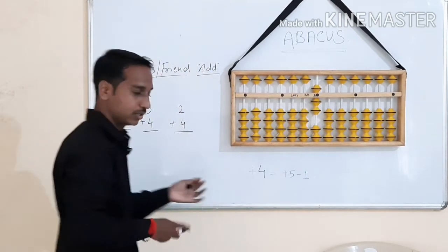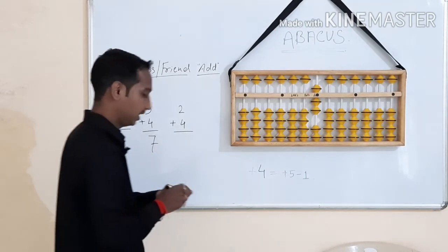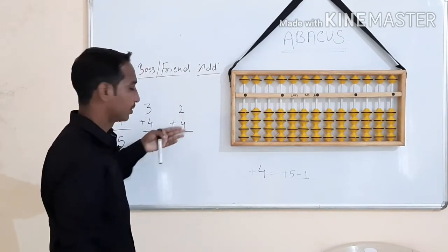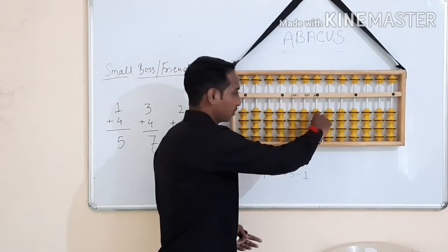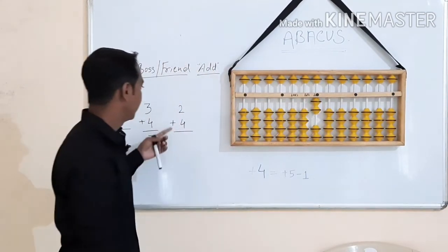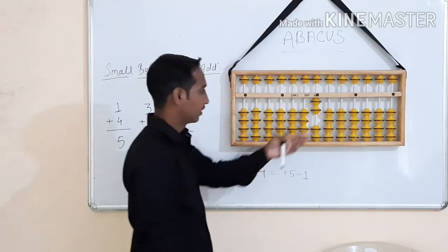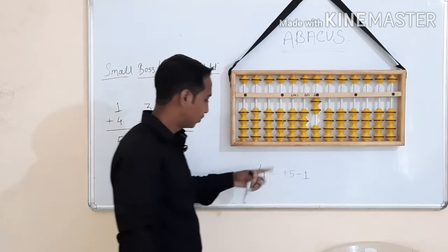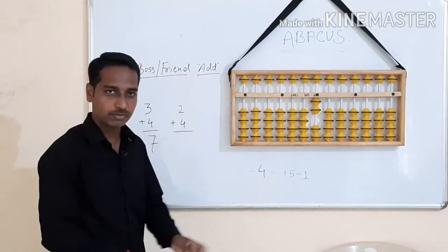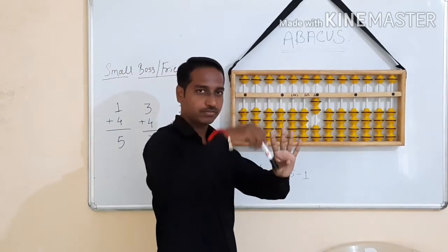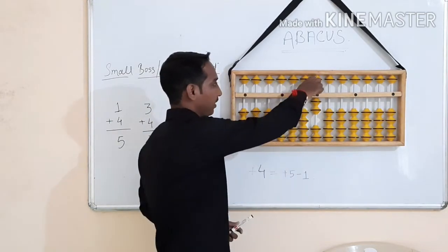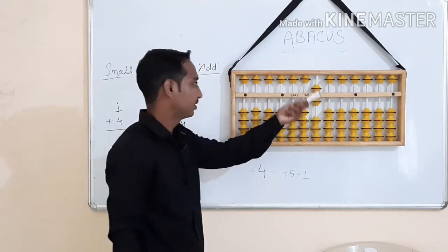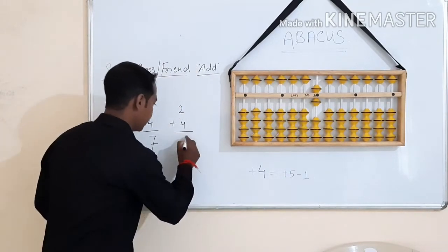Last example: 2 plus 4. 2 goes up to 2, then plus 4, add 4. The formula: add 4, add boss 5, less friend 1. Simple answer: 6. Answer is 6.